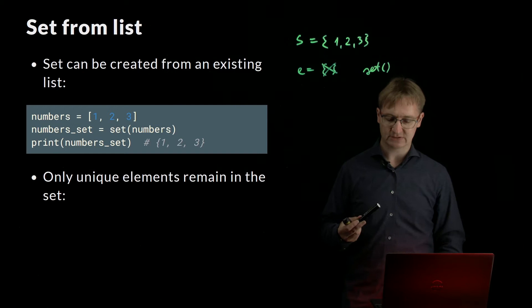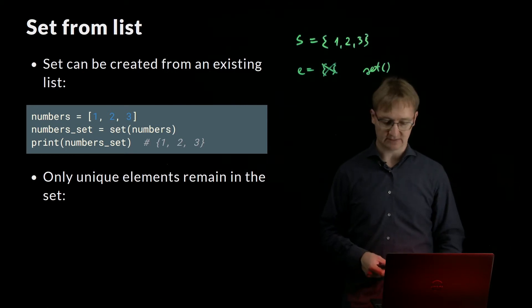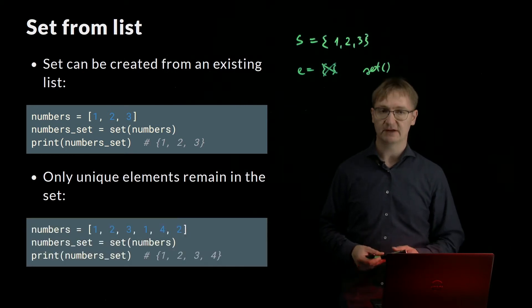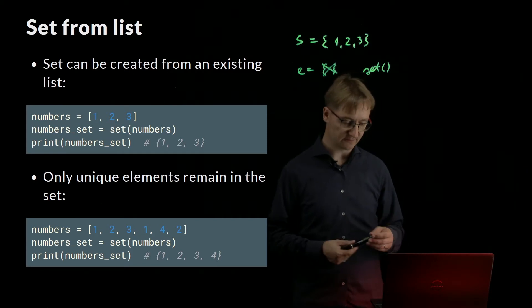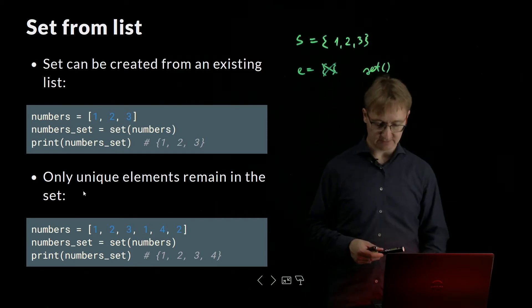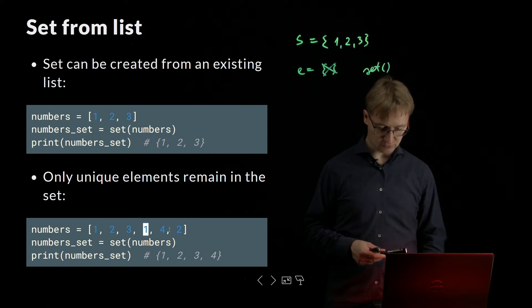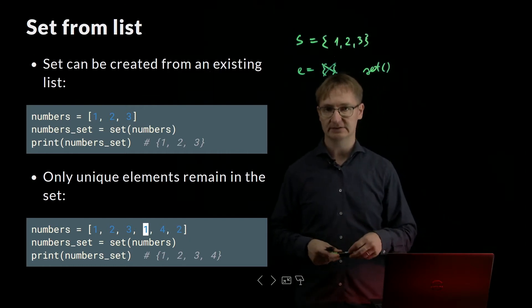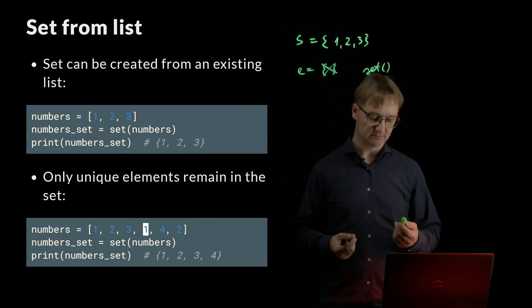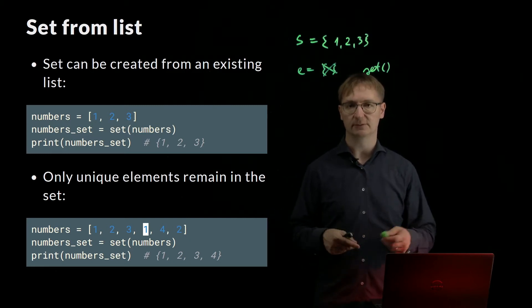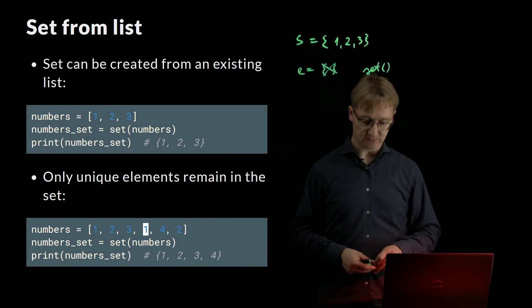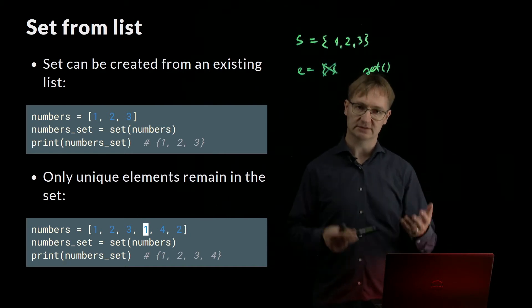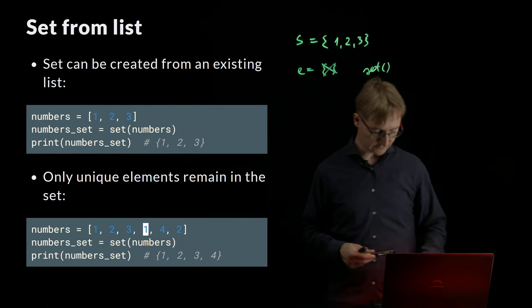As mentioned, only unique elements can be inside a SET. If I have a list of duplicate elements — for example, there are two ones and two twos — and I turn it into a SET, I only get unique elements. So if you have a task to remove duplicate elements from a list, an easy way is to turn it into a SET. Later you can turn it back into a list if you want.